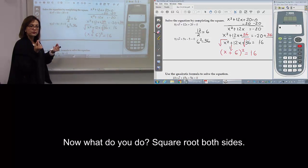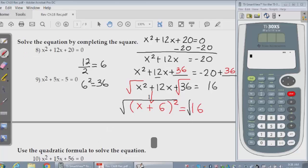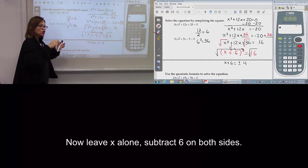Now what to do? Square root both sides. Now leave x alone. Subtract 6.